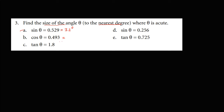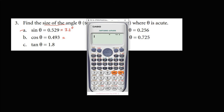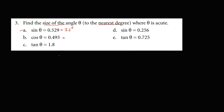For cosine theta equals 0.493, we use shift cosine of 0.493, which gives 60 degrees and 27 minutes. Since 27 minutes is less than 30 minutes, the final answer remains 60 degrees.